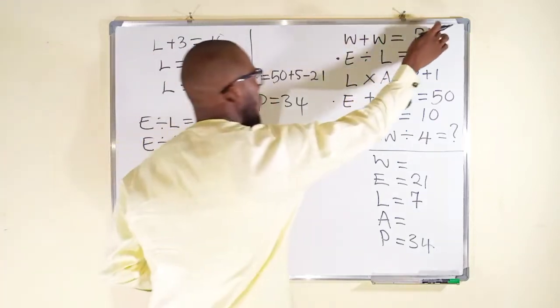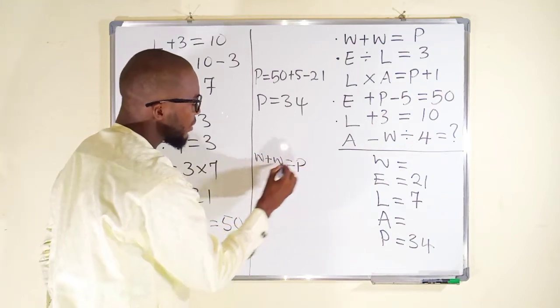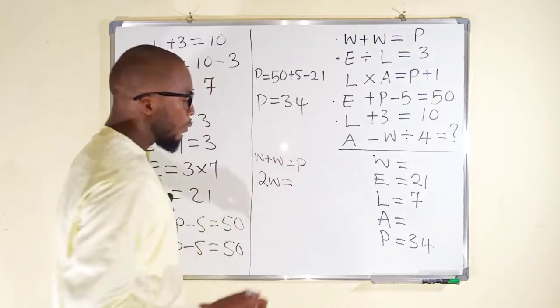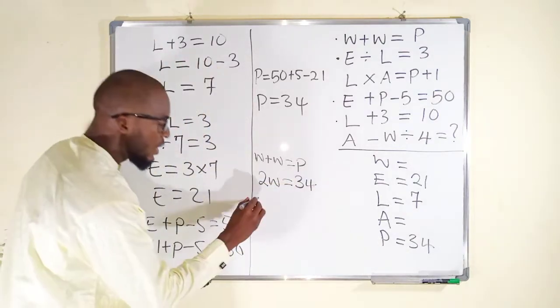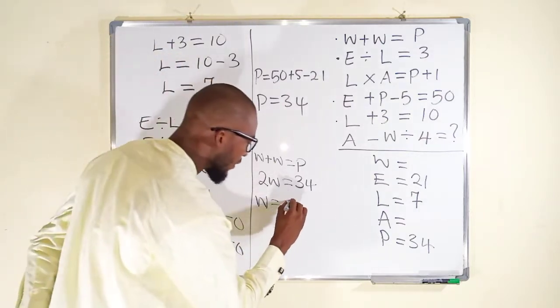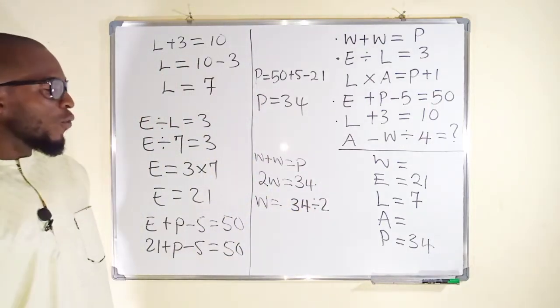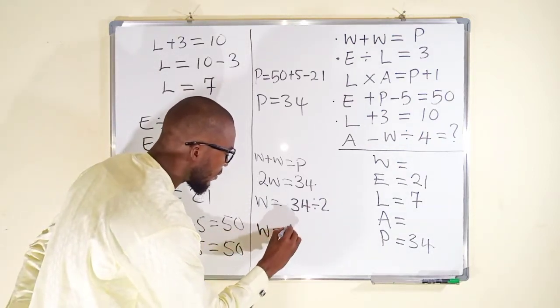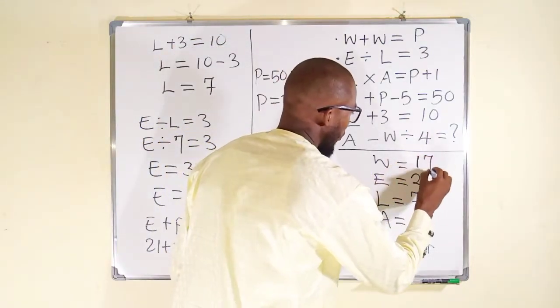What is left for us to find is W and A. For W from the first equation right here, you can see we have W plus W is equal to P. W and W are the same values. So we have two of them equals, but P is 34. W finally, because 2 is multiplying, if it crosses over equality sign, it will divide. So we have 34 divided by 2. And 34 divided by 2 will be equal to 17. W is equal to 17. So W is 17. Let us bring it here.